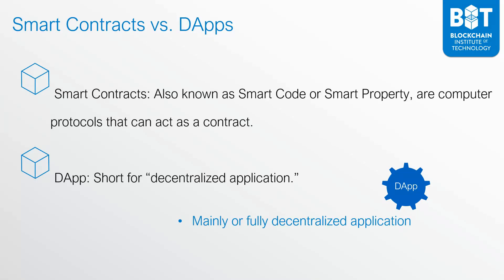The key thing is that a dApp is mainly or fully decentralized. Many decentralized applications are not fully decentralized, because many key things — for example, hosting and messaging — need to run on centralized products. So a dApp doesn't necessarily have to be fully decentralized; it can be mainly decentralized and still be a dApp.